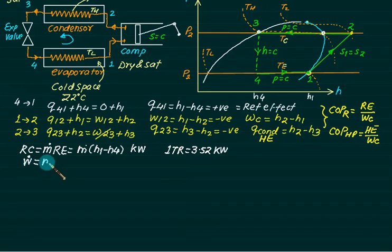W dot is simply given by M dot multiplied by W. W is H2 minus H1. This answer is always in kilowatts. Never write this answer in tons of refrigeration. If you take a ratio of Rc divided by W dot, you will get the same answer as COP.